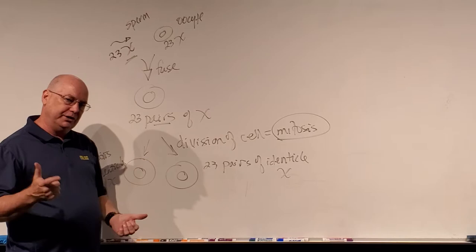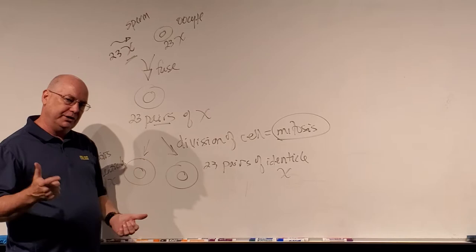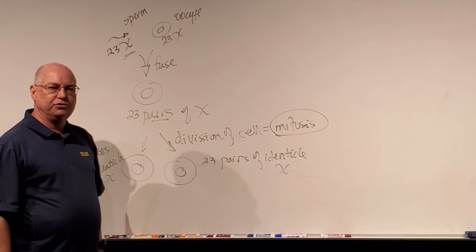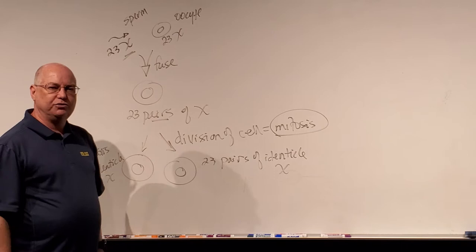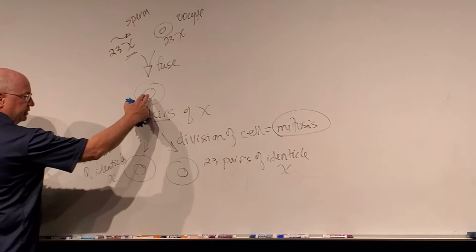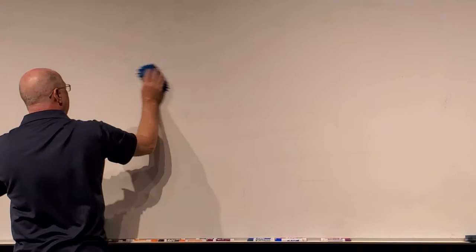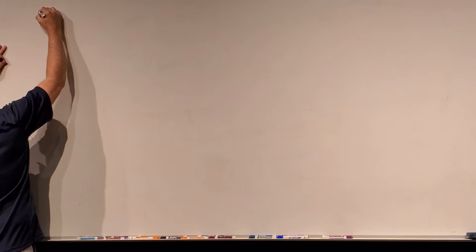I'm going to simplify as much as I possibly can and get down to the bare bones of what you need to know. We take one cell, copy the DNA, arrange it properly, and then separate into two separate cells — the whole process is referred to as mitosis. This process involves a lot of complicated steps, and there are five phases or stages of mitosis.